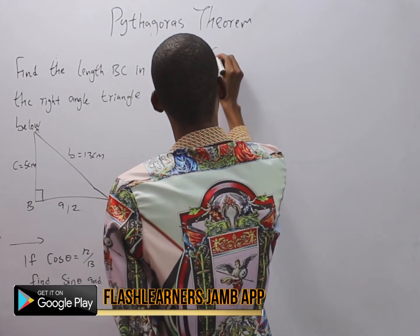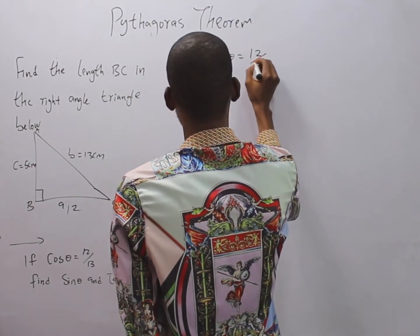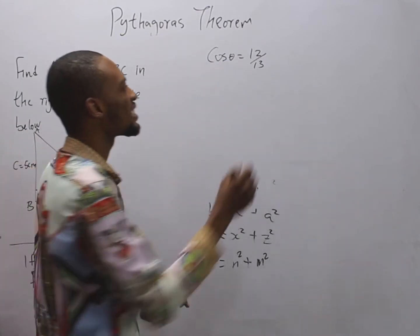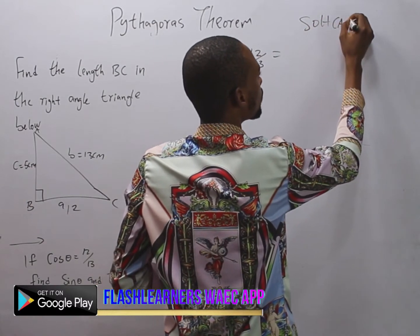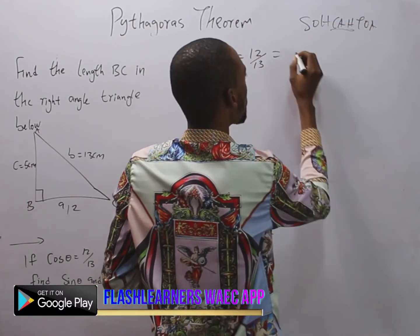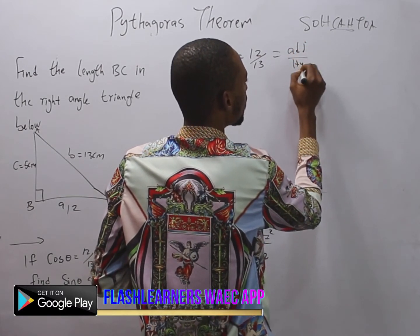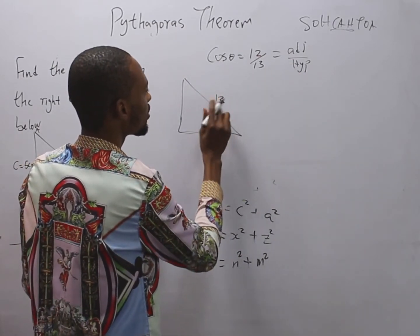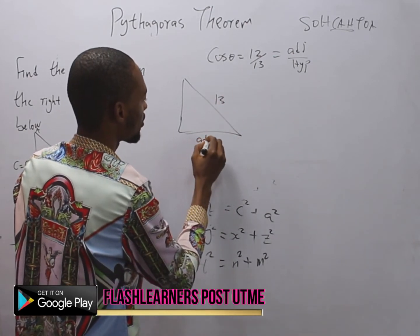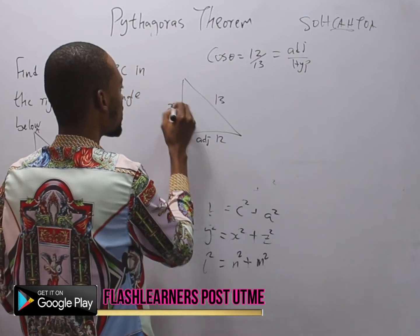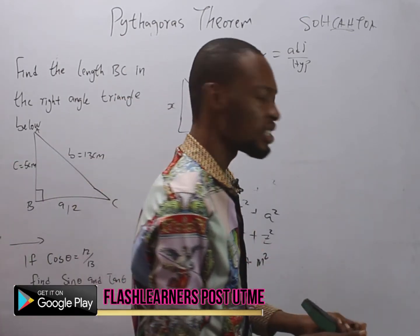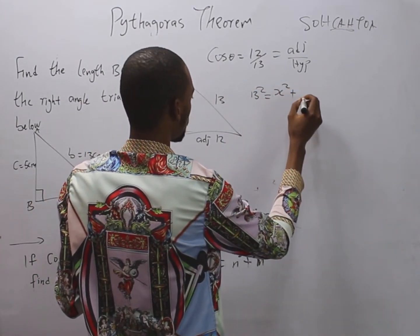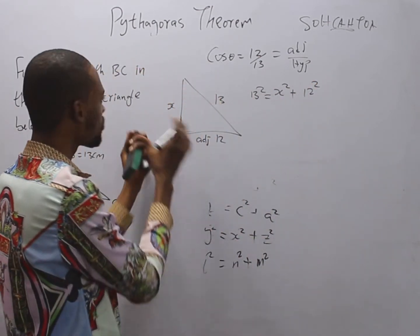Given that cos θ = 12/13, we know that cos θ = adjacent over hypotenuse. This means the hypotenuse is 13 and the adjacent is 12, so we need to find the opposite. From Pythagoras' theorem, hypotenuse² = opposite² + adjacent².